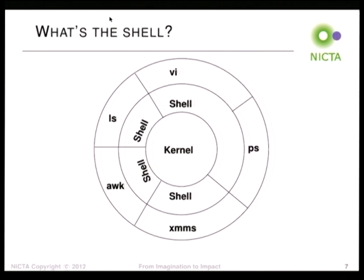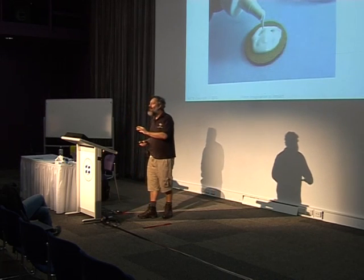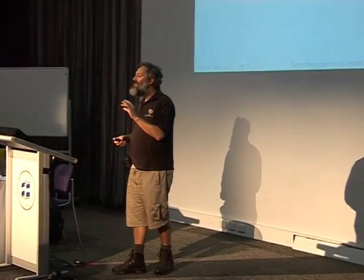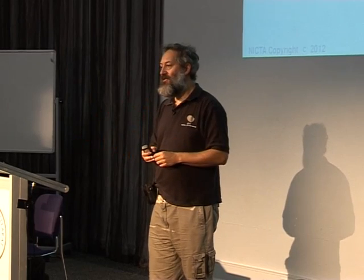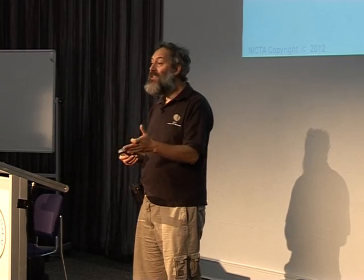This common diagram shows the kernel in the middle with the shell sitting around the outside. You live in the shell most of the time and it forks off other tools to do your work. But what the shell really is, is glue — it's a command line interpreter, but its real strength comes when you start using it to glue other things together. Almost every Unix program has built-in inter-process communication: every Unix program has an exit status where zero means 'I did what you asked' and any other number means it didn't. Every Unix process also has standard file descriptors: 0 (stdin), 1 (stdout), and 2 (stderr).